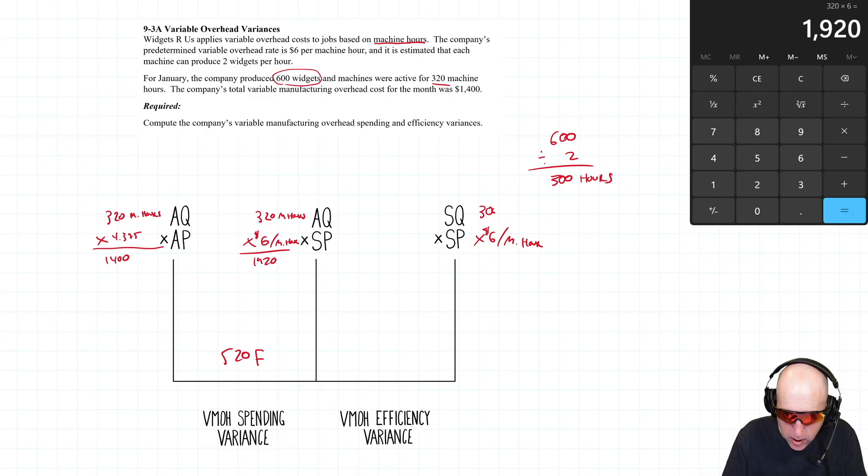300 machine hours times six dollars per hour is eighteen hundred dollars. So it actually took 320 hours to make what I think should have taken 300 hours.